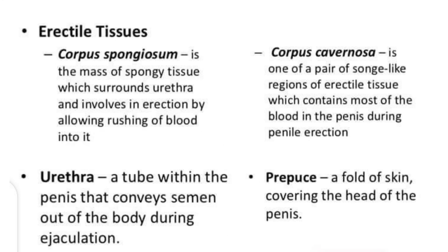Let's discuss the erectile tissues. Corpus spongiosum: these are the spongy tissues that surround the urethra and are involved in erection by allowing blood to rush into them. The second is corpus cavernosa: these are the erectile tissues which contain most of the blood during penile erection.